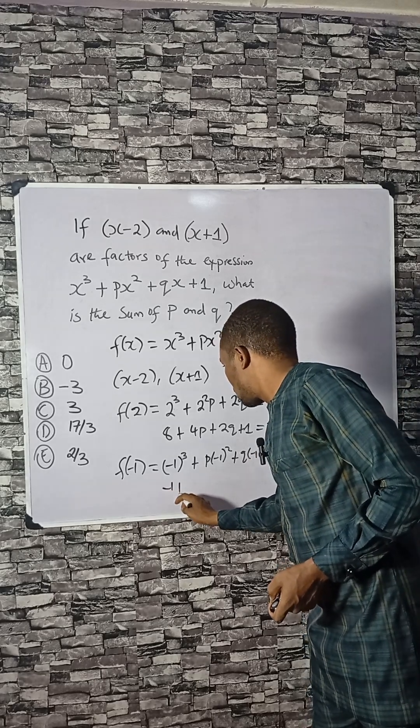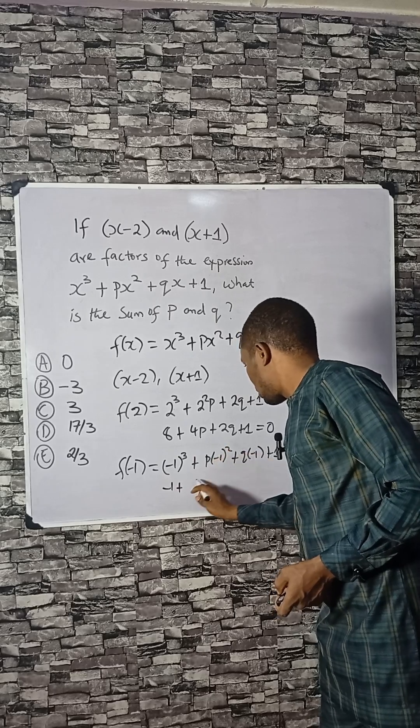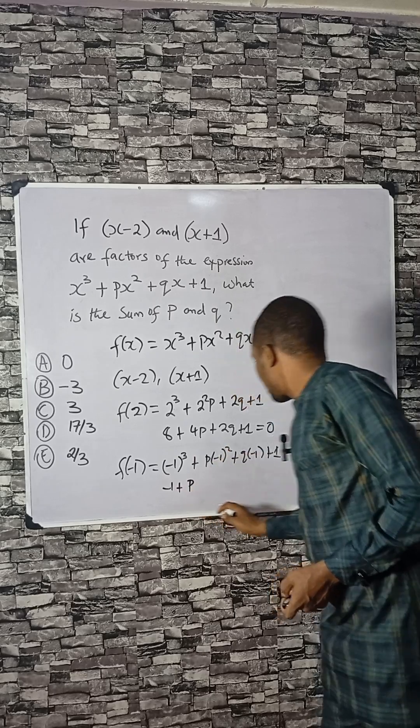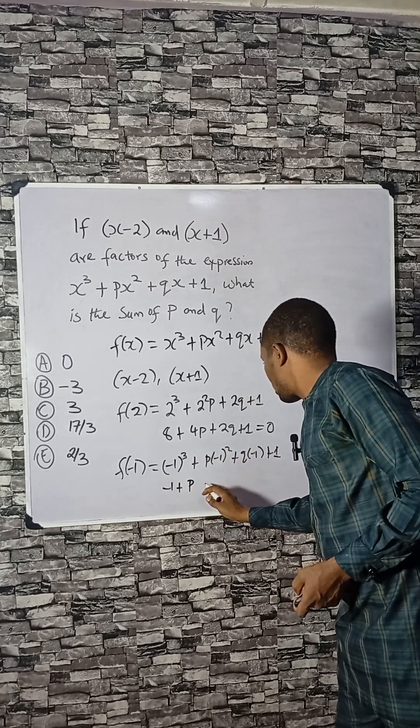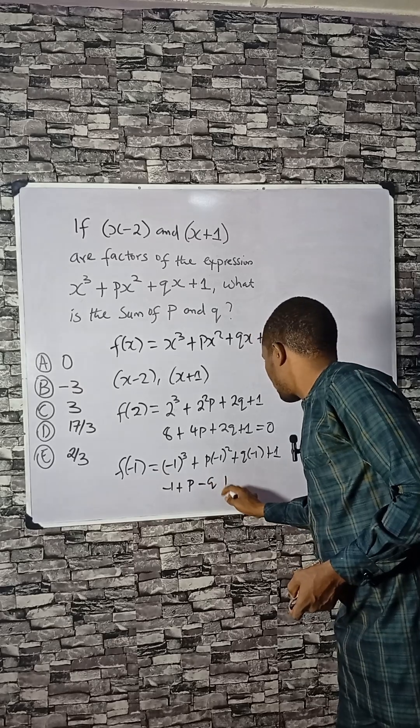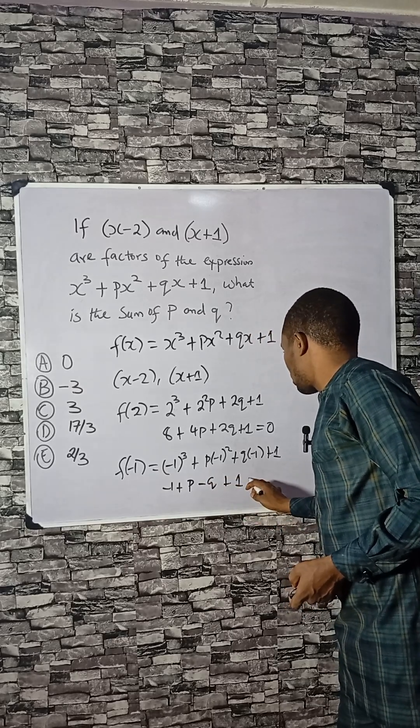This will be minus 1 plus p minus q plus 1. And as well, this will be equal to 0.